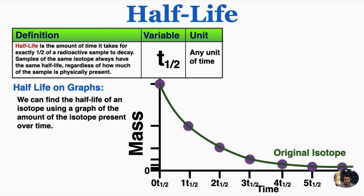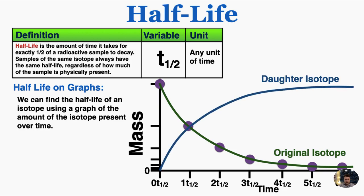And if I draw a line through it, this is what it looks like for the original isotope. And because the daughter isotope — the thing that the original isotope is decaying into — gets its mass from the original, the daughter isotope graph is going to look like this. So the sum of the original plus the daughter isotope should be close to the original mass. This pattern basically always appears for radioactive substances if you graph their mass or activity on the y-axis and time on the x-axis.